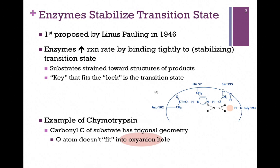For that reason, another model was proposed by Linus Pauling in 1946. This model suggested that enzymes help to stabilize the transition state. In other words, enzymes increase the reaction rate by binding tightly to and thereby stabilizing the transition state. Remember, in our reaction diagram the transition state was the midpoint between substrates and products — at that point we're straining the substrates to form products. In this model, the enzyme is still the lock but the key that fits so perfectly is that transition state.